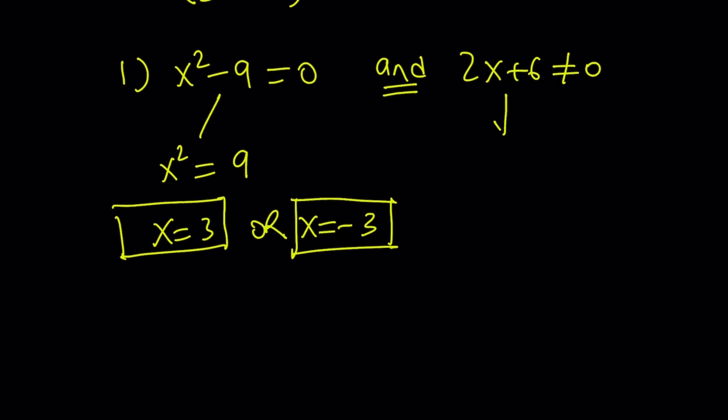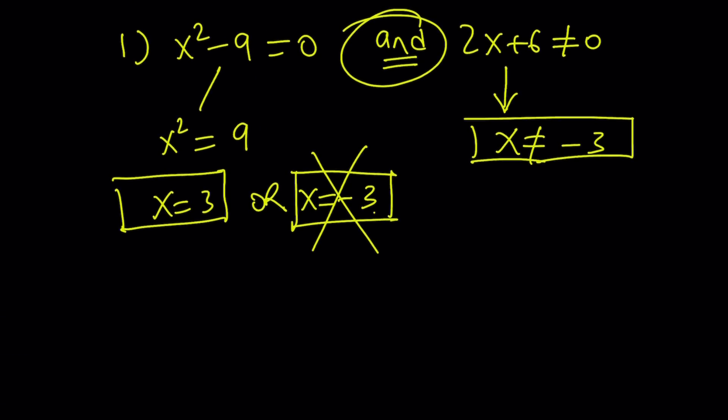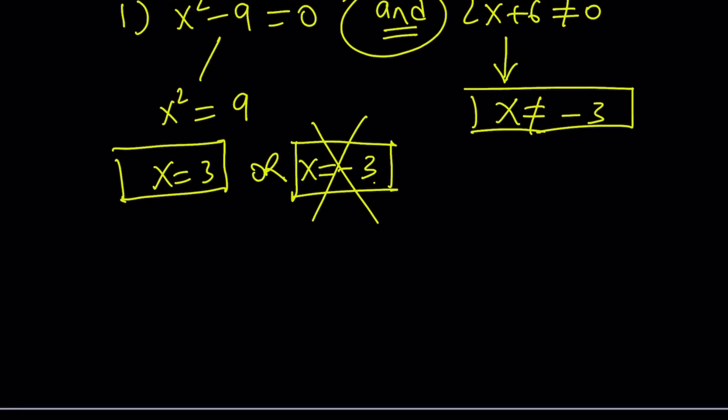So now we don't want this to be 0. Obviously when x is negative 3 this is going to be 0. So you don't want x to be negative 3. So if you look at this, you want x to be either 3 or negative 3 but at the same time you don't want x to be negative 3 which kind of cancels out the second option. So x equals 3 is going to be the only solution that comes from here. When we look at the graph please consider these cases because that's going to make much more sense.